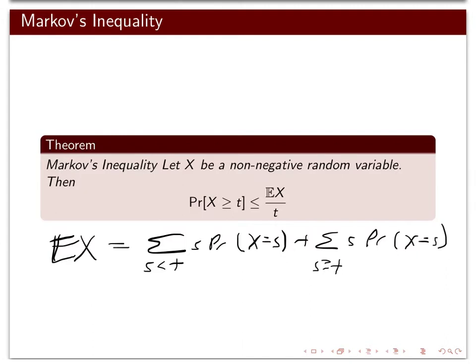We want to look for a lower bound, because in Markov's inequality the expectation of x is on the right-hand side. So this is at least — the first part of the sum: since x is not negative, all these s's are at least zero, so this part of the sum is at least zero.